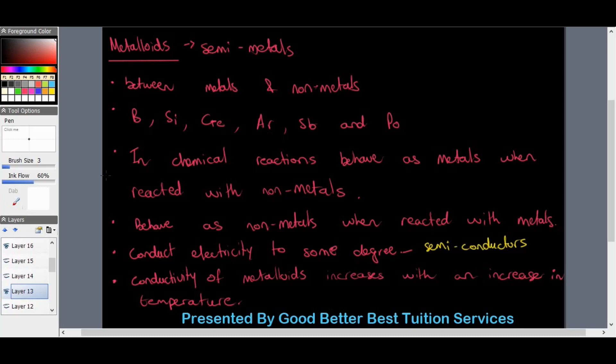Metalloids can conduct electricity to some degree so they will therefore be semiconductors. Metals are good conductors so semi-metals will be semiconductors. The conductivity of metalloids increases with the increase in temperature. As a side note, the conductivity of metals will decrease as temperature increases, but as temperature increases for metalloids their conductivity seems to increase.